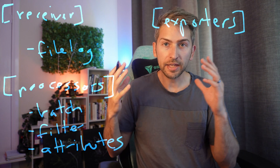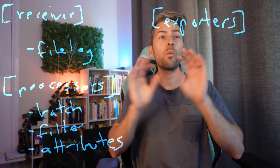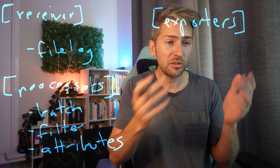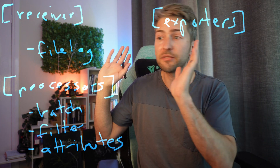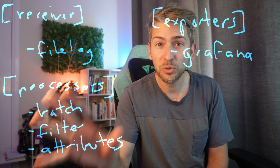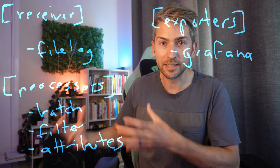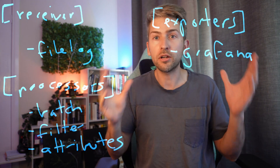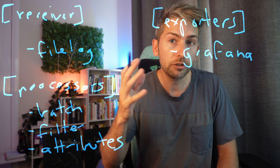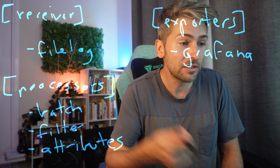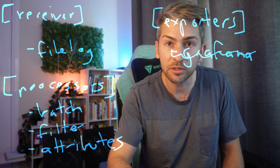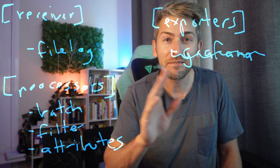You then have exporters. This is where do you want to send your telemetry to? Are you using Splunk? Are you using Grafana? Are you using some kind of other custom tool? You can send this wherever you want. And this is where OpenTelemetry really shines, because you are not locked into a specific vendor. When you've set this up, if you're using Grafana now and you decide to switch to another tool, all you have to do is change a single line in a config file. Very handy.